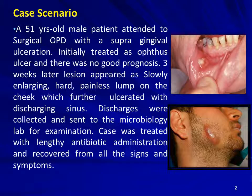A case scenario: a 51-year-old male patient attended surgical OPD with a supragingival ulceration, initially treated as an ulcer with no good prognosis. Three weeks later, the lesion appeared as a slowly enlarging hard painless lump on the cheek, which further ulcerated with a discharging sinus. Discharges were collected and sent to the microbiology laboratory. The case was treated with lengthy antibiotic administration and recovered from all signs and symptoms.